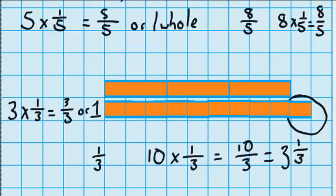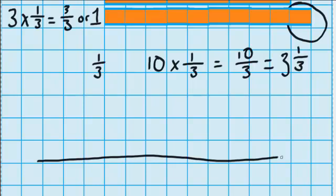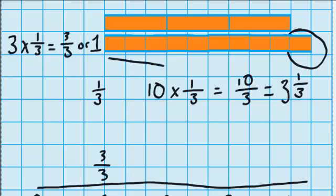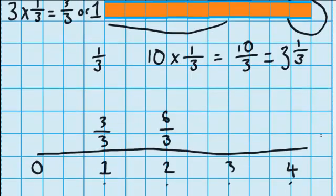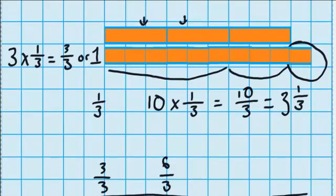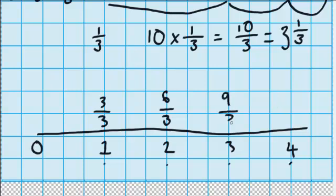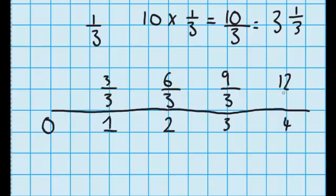Let's see if we could place these numbers on a number line. I'll draw my number line down here: zero, one, two, three, and four. We worked out earlier that three-thirds is the same as one whole, so three-thirds and one whole fit at the same point. And six-thirds is the same as two wholes. And nine-thirds is the same as three wholes. So four wholes must be the same as twelve-thirds.